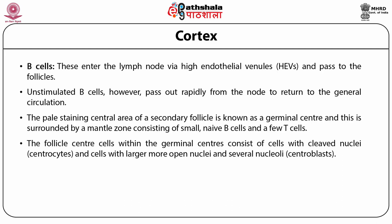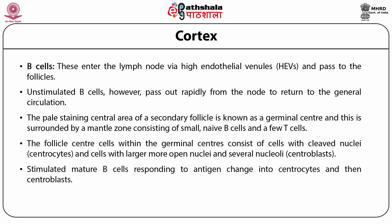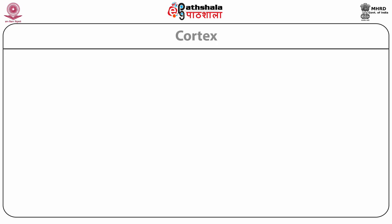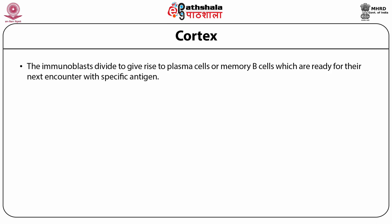The follicle center cells within the germinal centers consist of cells with cleaved nuclei and cells with larger, more open nuclei and several nucleoli. Stimulated mature B cells responding to antigen change into centrocytes and centroblasts. The centroblasts leave the follicle and pass to the pericortex and medullary sinuses, where they become immunoblasts. The immunoblasts divide to give rise to plasma cells or memory B cells, which are ready for the next encounter with the specific antigen.